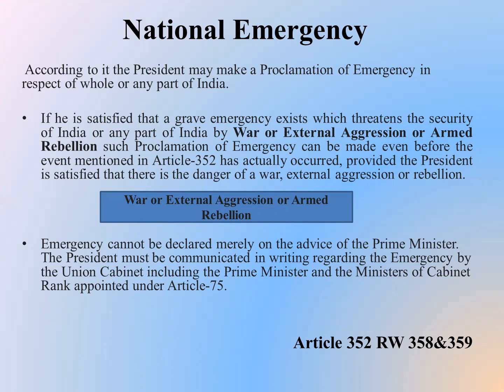Students, you have to mark these three points: first is war, second is external aggression, and third is armed rebellion. If there is any kind of situation which shows that there should be a provision to proclaim the emergency, which in the judgment of the President is reliable, then the national emergency is proclaimed through the President of India. Emergency cannot be declared merely on the advice of the Prime Minister. The President must be communicated in writing regarding the emergency by the Union Cabinet, including the Prime Minister and ministers of cabinet rank appointed under Article 75.